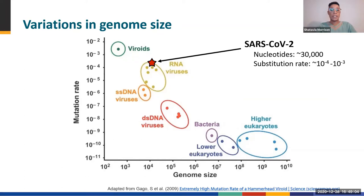Genome size varies greatly, spanning many orders of magnitude, with viruses and viroids at the small end and higher eukaryotes at the larger end of the spectrum. There is a general inverse relationship between genome size and mutation rate, with smaller genomes typically mutating more rapidly. SARS-CoV-2 has an RNA genome, marked here with the red star among other RNA viruses. It has an approximate genome size of 30,000 nucleotides and an estimated substitution rate in the range of 10⁻⁴ to 10⁻³, which equates to approximately two mutations per month. In Module 1.3, you will learn more about how substitution rates and mutations impact phylogenetic analyses.